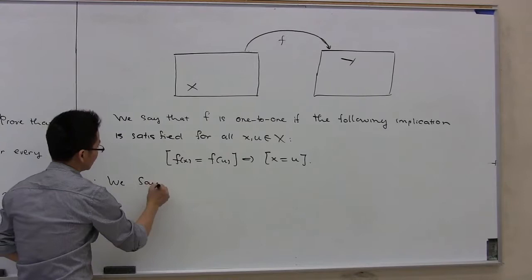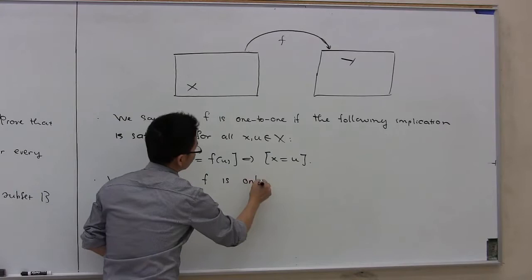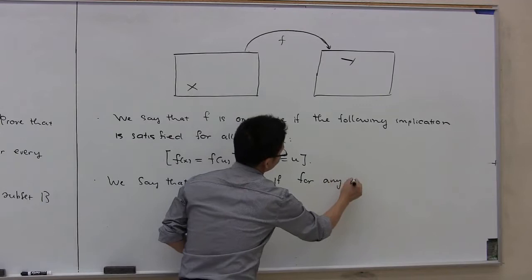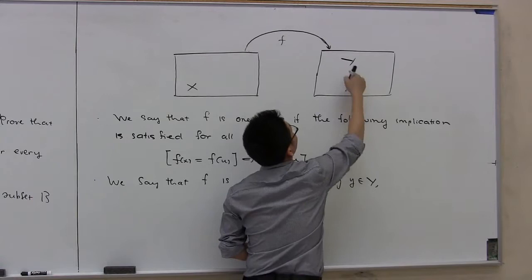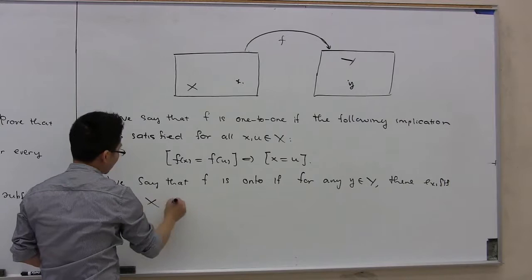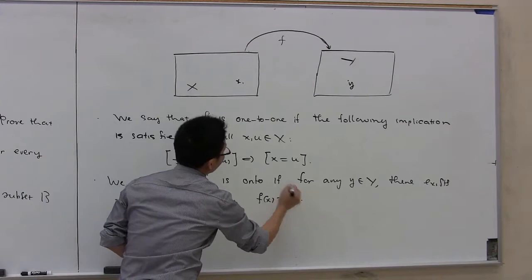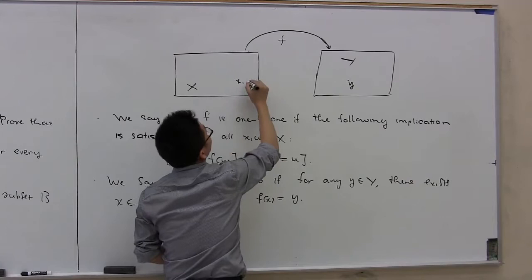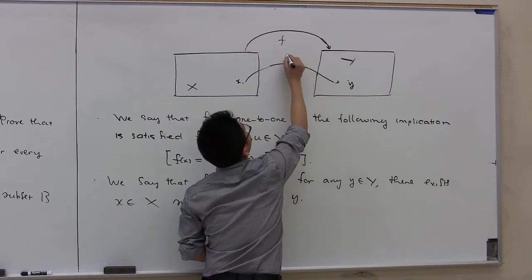We also say that f is an onto function if, for any y in the co-domain Y, there exists x in X such that f of x equals y. So if you take any y in the co-domain Y, you can always find x in X such that f of x equals y.